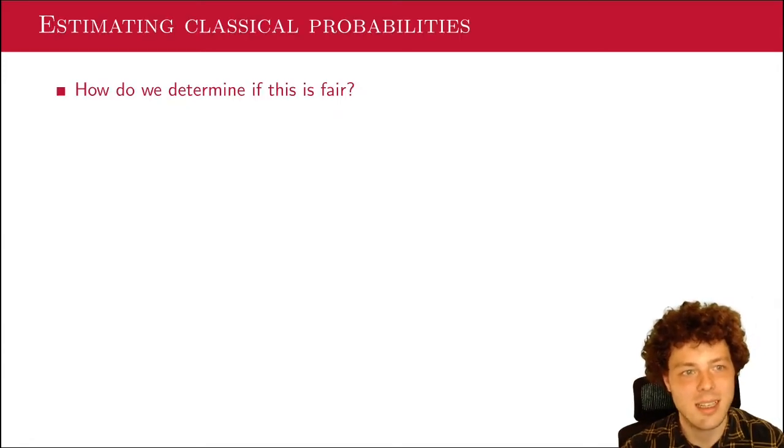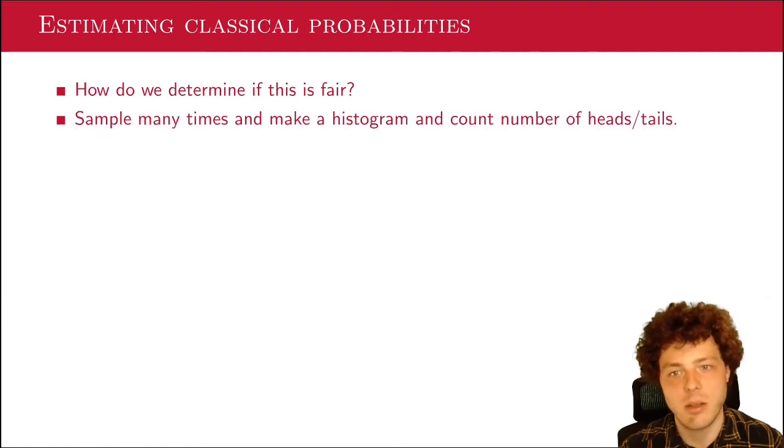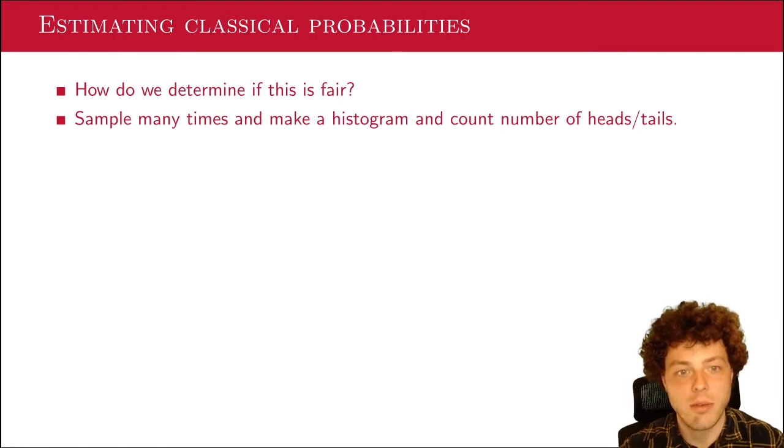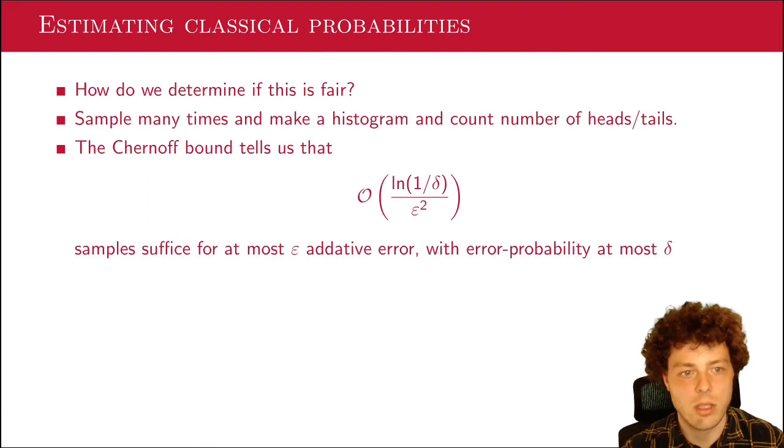Well, you might know how to do this classically. To determine whether a coin or any probability is fair, you just sample it a lot of times. You basically make a histogram and count the number of heads or tails, and check whether it's about 50-50. But of course, the question is, how many samples do you need to be rather sure? And you can use the Chernoff bound that tells you that if you want the delta probability at most of being more than epsilon off from the real probability—so epsilon is your additive approximation error, and delta is your error probability of our algorithm—so that's the probability of being more than epsilon off.